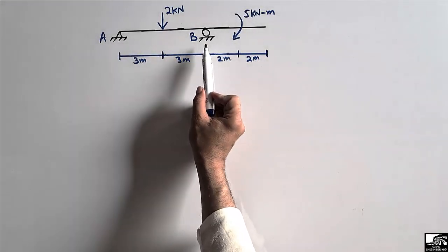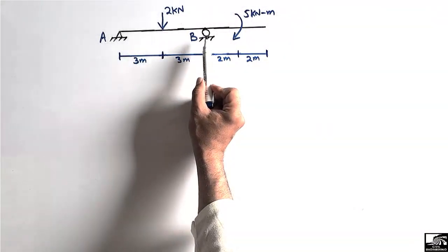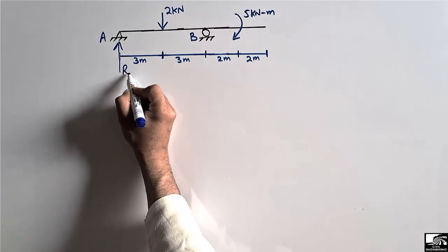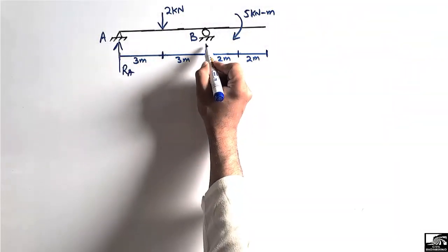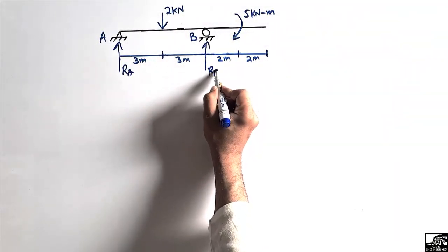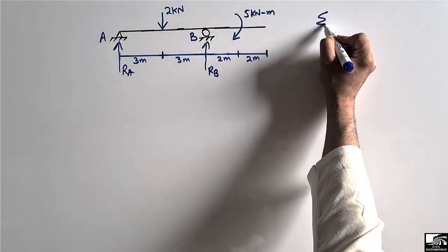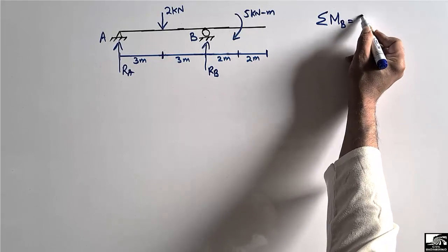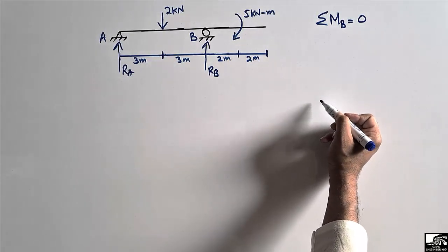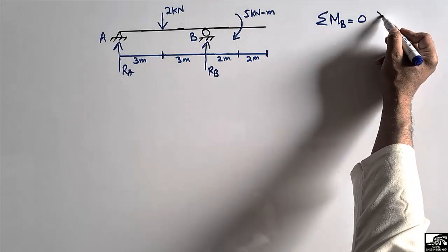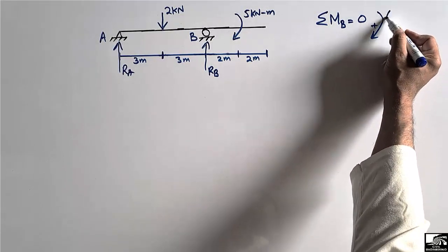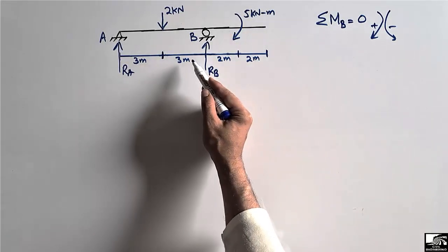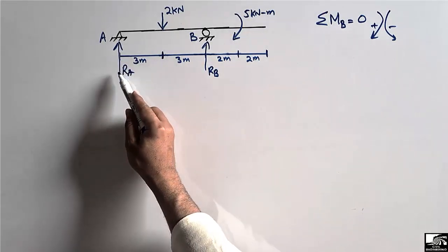The first step is to find the support reactions. Let's consider this is support A and this is support B, so they will have vertical reactions RA and RB. I will use the equilibrium equation: summation of moments about point B equals zero. The sign convention is: clockwise moment is positive and anti-clockwise moment is negative.